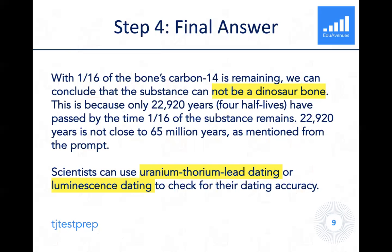Our fourth and final step, which is consistent across all TJ admissions problems, is to clearly state the final answer. With 1/16th of the bone's carbon-14 remaining, we can conclude that the substance cannot be a dinosaur bone. This is because only approximately 23,000 years or four half-lives have passed by the time 1/16th of the substance remains, and that figure is not even close to 65 million years mentioned in the prompt. Scientists can use uranium-thorium-lead dating, luminescence dating, or relative dating to check for dating accuracy.